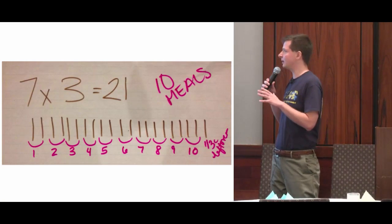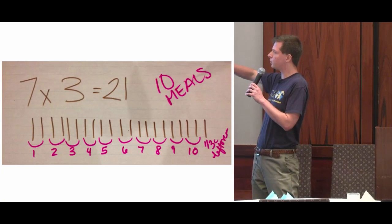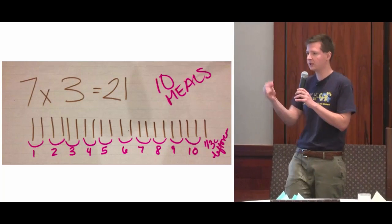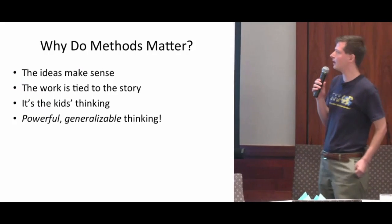And then every once in a while, a student says something like this: I didn't want to draw it, so I thought there are 21 thirds of a cup in seven cups, and then I grouped those together to make meals. So there were 10 and a half meals.